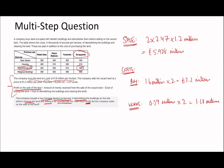Since we have two hectares, the works cost becomes £0.59 million times 2, which is £1.18 million. The total costs are therefore £1.18 million plus £3.2 million, giving £4.38 million. Profit is revenue minus costs: £5.928 million minus £4.38 million equals £1.548 million pounds.